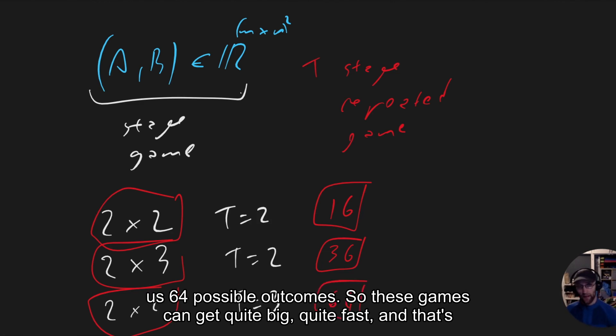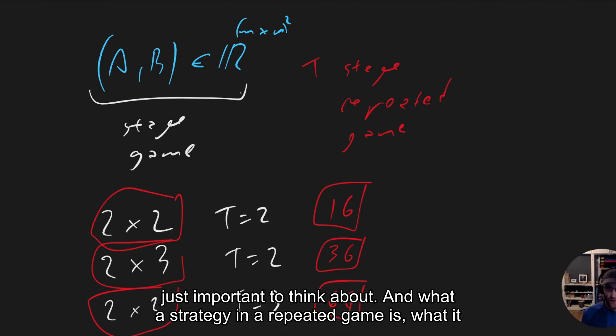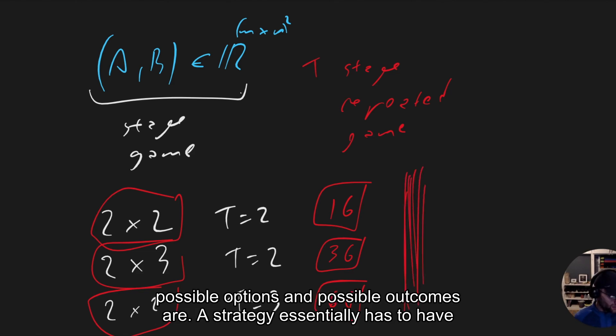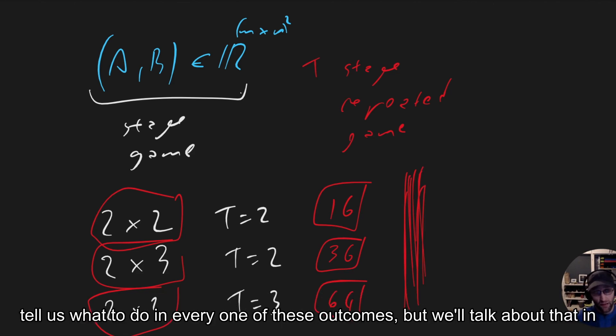So these games can get quite big quite fast, and that's important to think about. What a strategy in a repeated game is, what it represents, can be quite difficult to get your head around because of how big the possible options and possible outcomes are. A strategy essentially has to tell us what to do in every one of these outcomes.